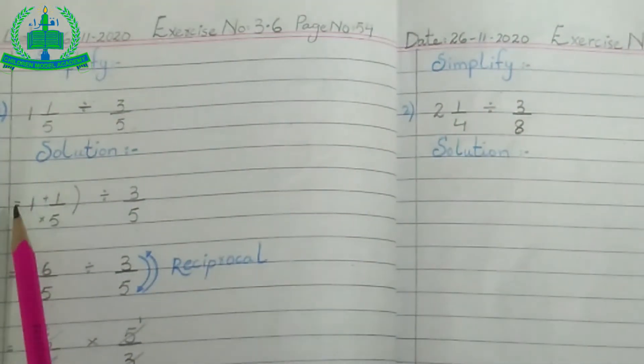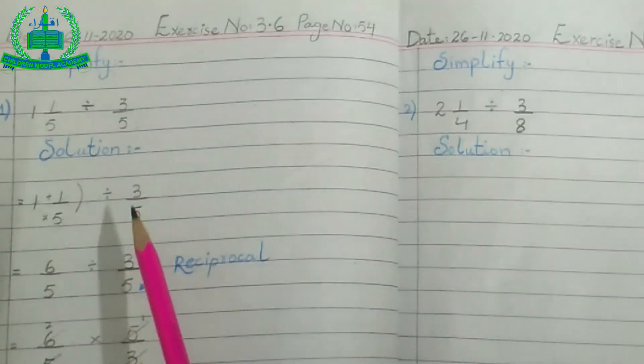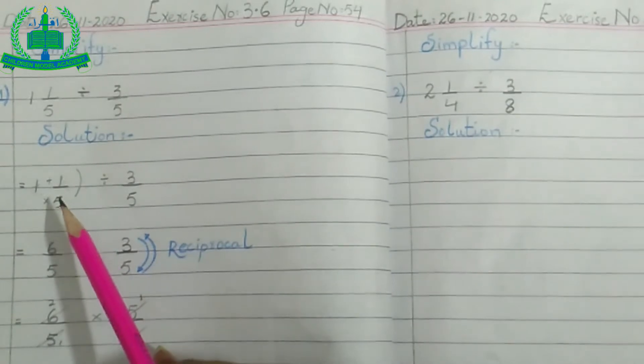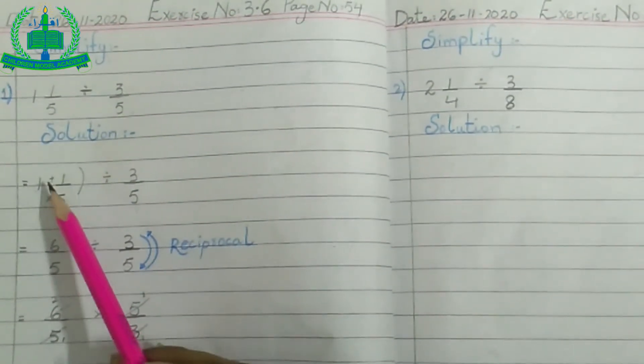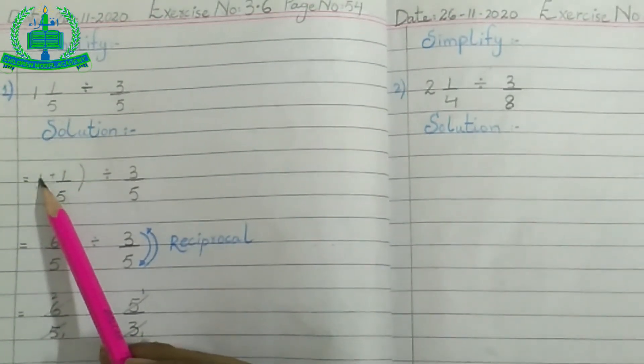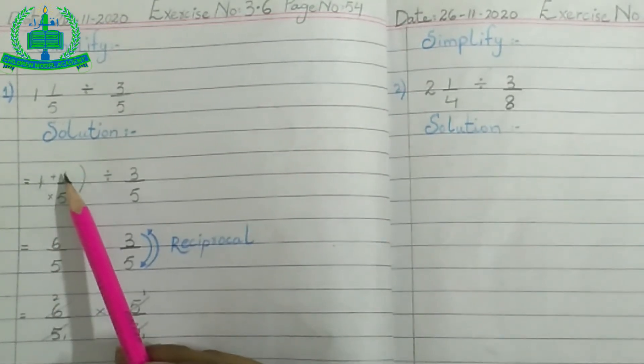First we write is equal to 1 whole 1 upon 5 divided by 3 upon 5. सबसे पहले हम whole number खतम करने के लिए, denominator को whole value के साथ multiply करते हैं. 5 times 1 is 5, then add numerator, 5 plus 1, 6.